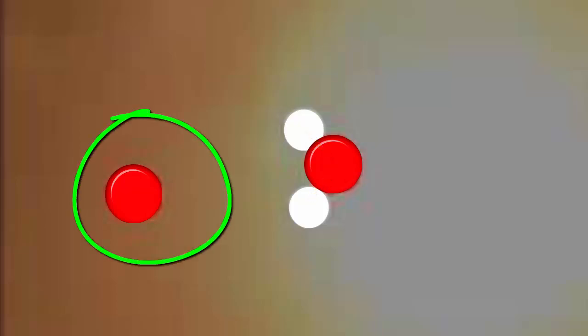But the other oxygen atom missed out on getting any hydrogens at all. So it's got two unused bonds, and is on the lookout for other atoms to join to. And we've run out of hydrogen atoms because we only started with two, and the other oxygen got them both.